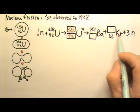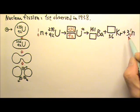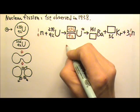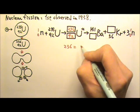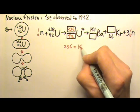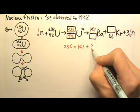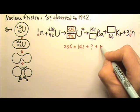And then over here, we also need 1, 0 to help us balance. So here we have 236 on the top, and it should equal to 141 plus this number, plus 3 times 1.